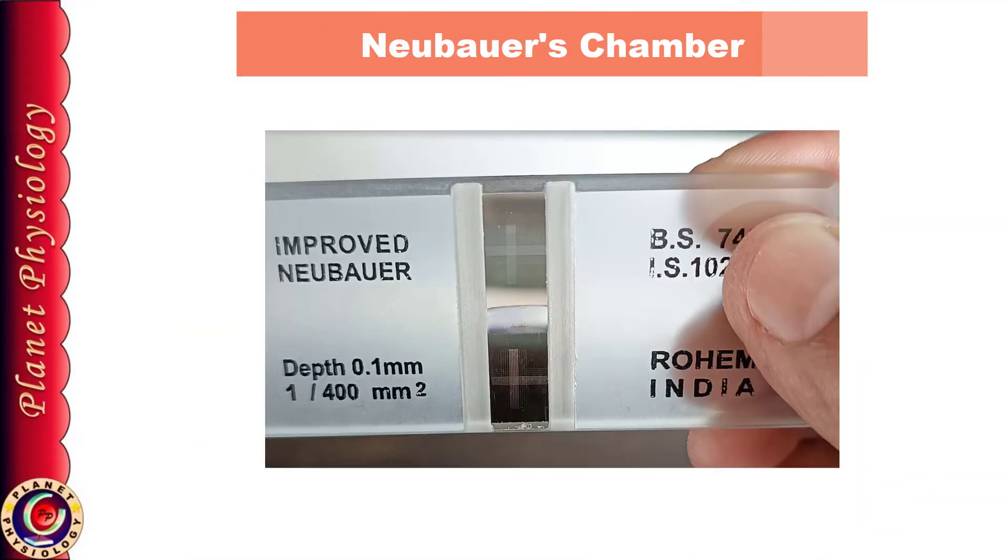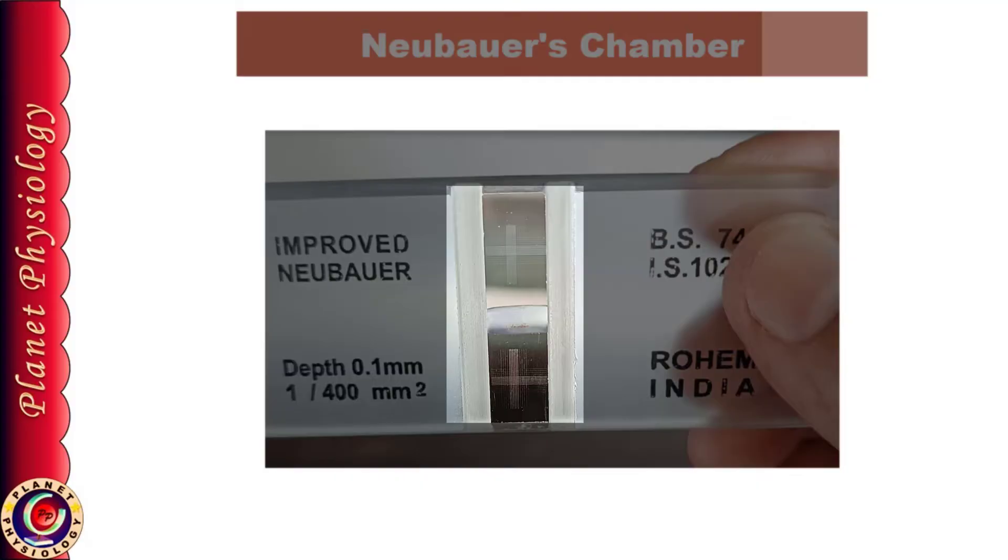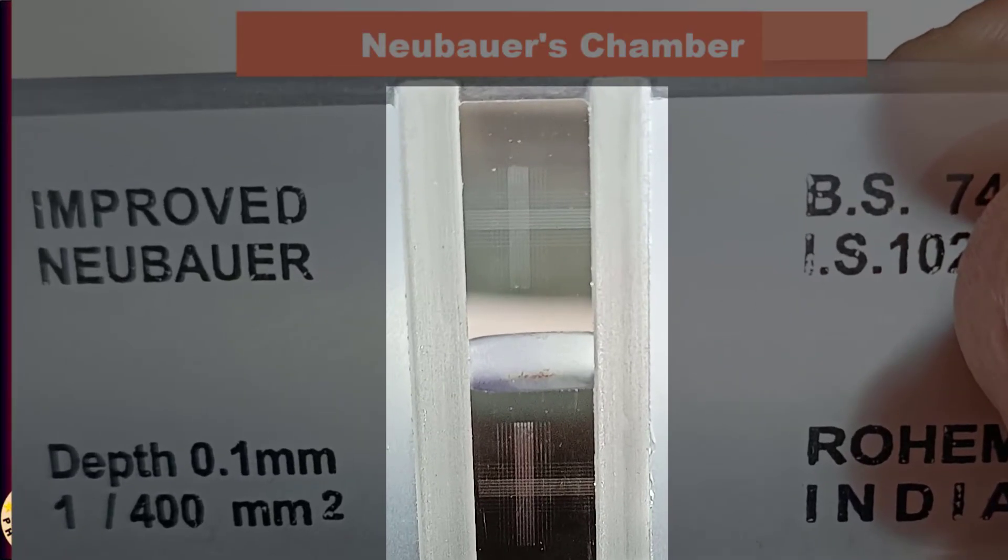This is the Neubauer chamber and if you observe this central counting area against light, you can easily notice plus sign on either side of the platform. For counting various types of cells, we need to focus this part under the microscope.